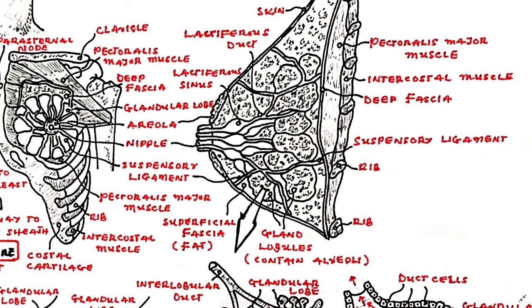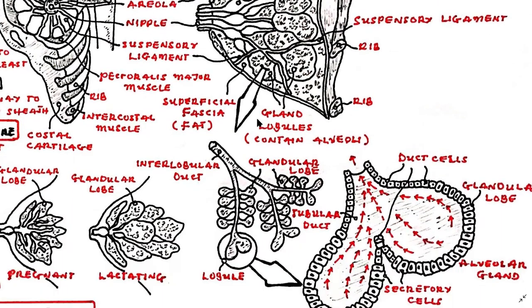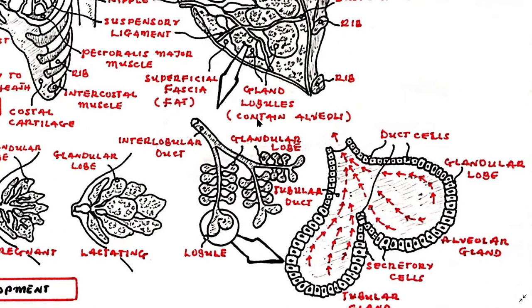In the early stages of pregnancy, the lactiferous duct system undergoes profound proliferation. Small inactive tubular end-alveolar or tubular-alveolar glands begin to form, which eventually open into the alveolar ducts. A lobule consists of a number of these ducts and glands.